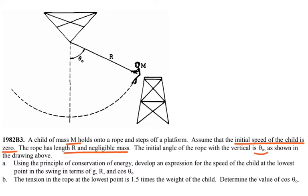The initial angle of the rope with the vertical is theta as shown in the drawing above. Using the principle of conservation of energy, develop an expression for the speed of the child at the lowest point of the swing in terms of g, R, and cosine theta.